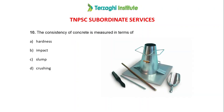Next question: how is the consistency of cement measured? Options are hardness, impact, slump, or crushing. For fresh concrete, you place concrete in a cone-shaped mold. When you lift the handle and remove the mold, a cone shape forms. Based on the drop of the cone shape, we classify the consistency of the concrete. The answer is Option C — Slump.